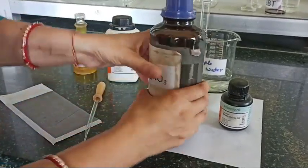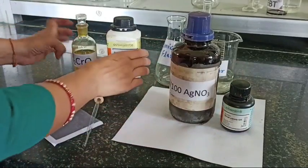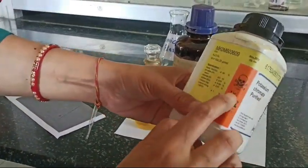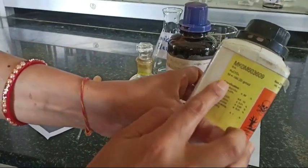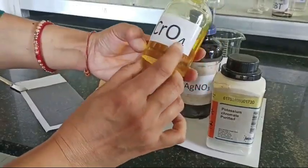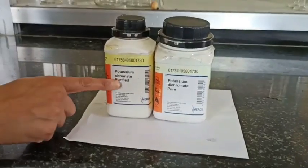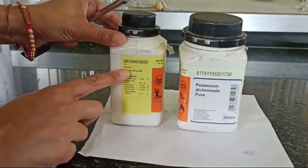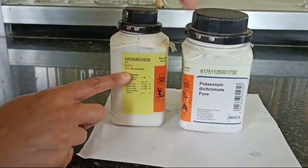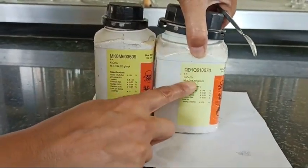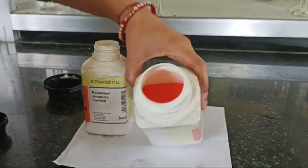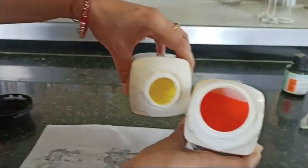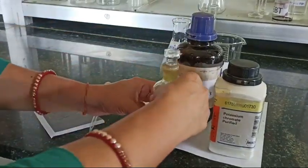This is potassium chromate. Potassium chromate is used as an indicator. Students get confused - this is K2CrO4. Students get confused between potassium chromate and potassium dichromate, so let me give you the explanation. Here it is K2CrO4 and here it is K2Cr2O7. So K2CrO4 looks like this and this is K2Cr2O7 how it looks like. So you can differentiate between these two.